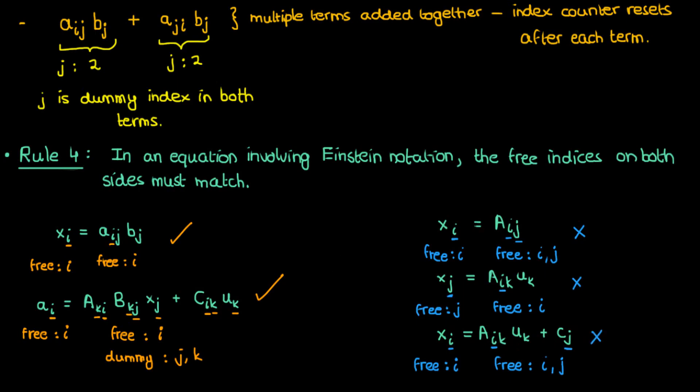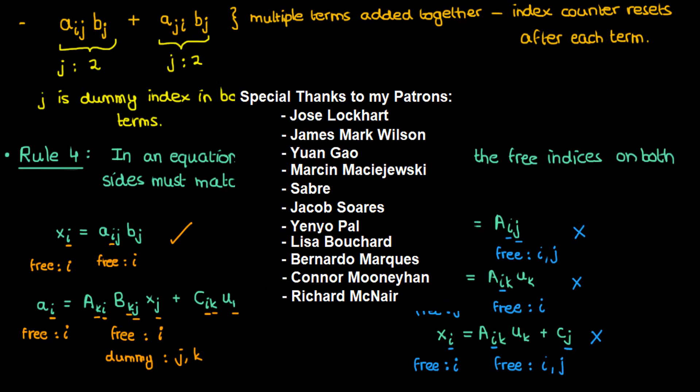Anyway, that should do it for this video. In the next lesson, I'm going to continue with Einstein notation with a few more examples and identities. I'd like to thank the following patrons for supporting me at the $5 level or higher, and I've put a link to my Patreon in the description. And if you enjoyed the video, feel free to like and subscribe. This is the Faculty of Khan, signing out.